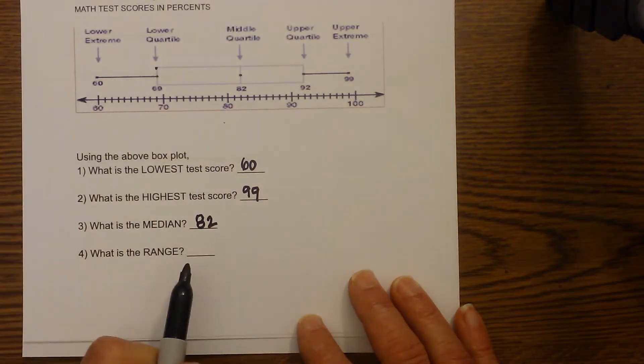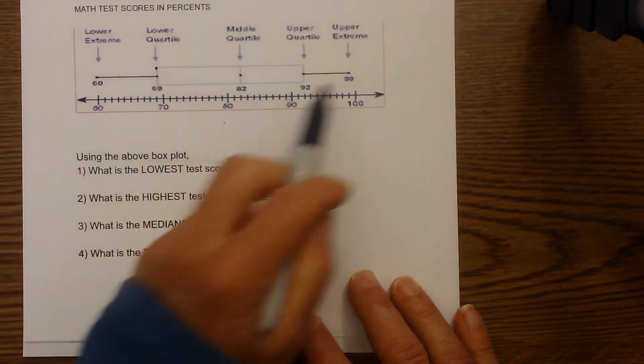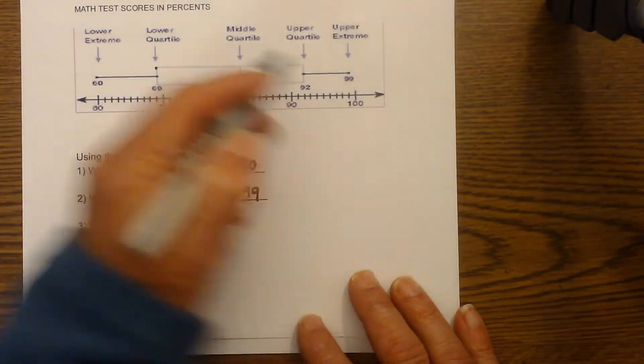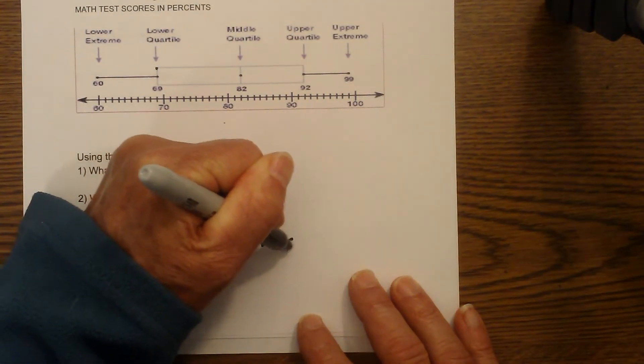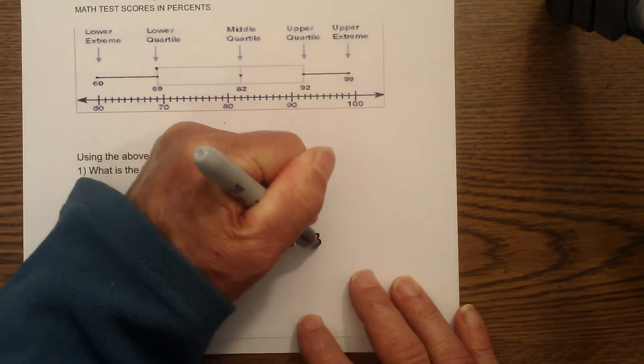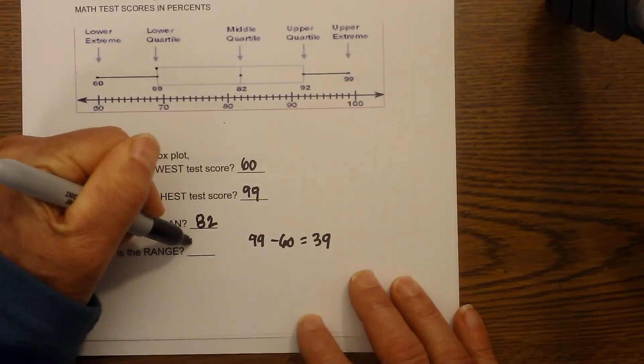And then finally, the range. Well, to get the range, we take the two extremes. So we have the upper extreme, 99 minus 60, and that equals 39. So the range is 39.